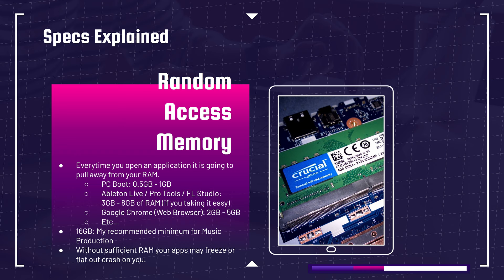If you open something like Ableton Live, Pro Tools, or FL Studio, you're going to use anywhere from 3 to 8 gigs of RAM if you're not pushing the software hard. Then if you need to do a little research and jump onto Google Chrome, you'll use another 2 to 5 gigs. So you can see how easily you already ran out of 8 gigs. That's why I recommend 16 at a minimum.